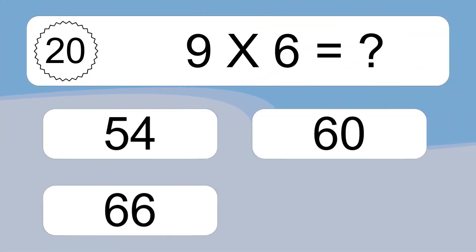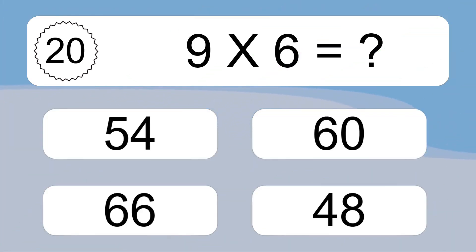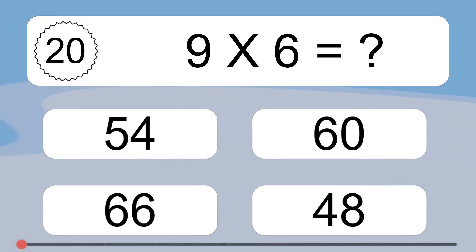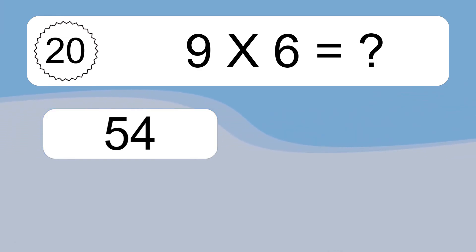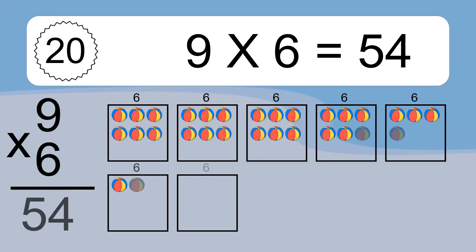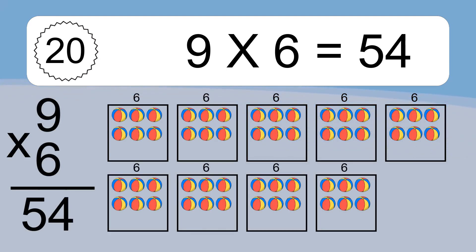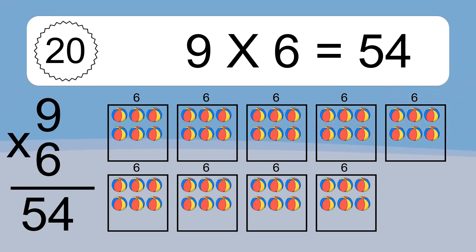Nine times six equals what? Nine times six equals 54. We have nine boxes, and each box has six colorful balls inside. If you count all the balls in all the boxes together, you will have nine times six balls. This equals 54 balls.